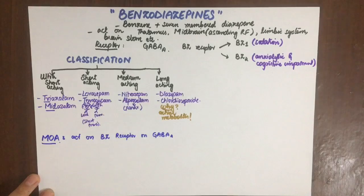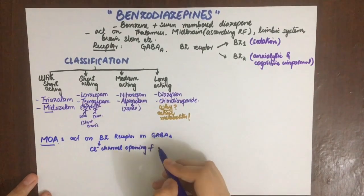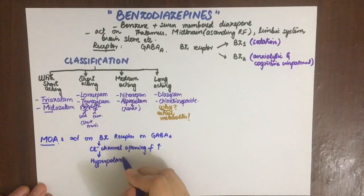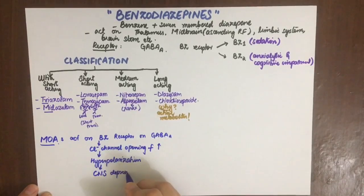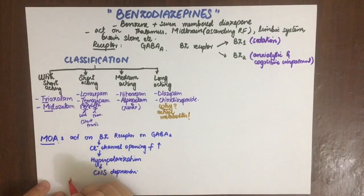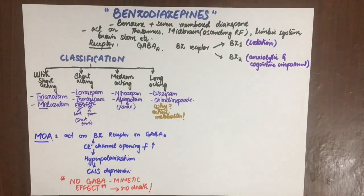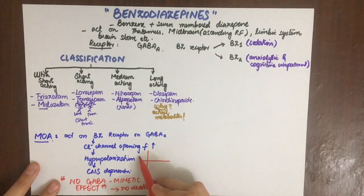Regarding mechanism of action — as discussed in previous videos — benzodiazepines act on the benzodiazepine receptor on GABA-A, which increases the frequency of chloride channel opening, leading to hyperpolarization and CNS depression. An important point is that benzodiazepines have no GABA mimetic effect, meaning they cannot reach toxic levels sufficient to cause coma and respiratory depression.